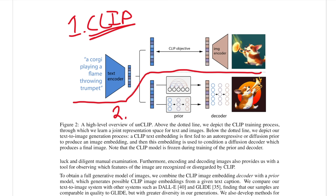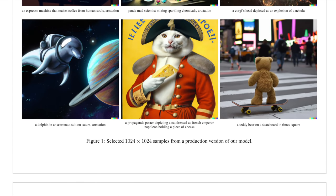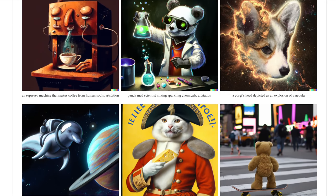Once CLIP is trained, the next step is to go from text embeddings to image priors — essentially a latent vector that is supposed to be a compressed encoding of the image. Remember in DALL-E 1 they used an autoregressive model to achieve this. Here they try a very similar autoregressive method and also something else. The big difference is after that: once they've generated that image prior, instead of decoding it with a DVAE, which they are no longer using, they use a diffusion model — and as you can see from the sample images, this works much better.